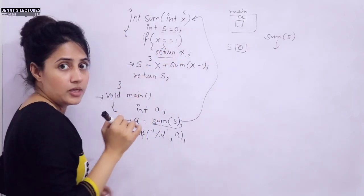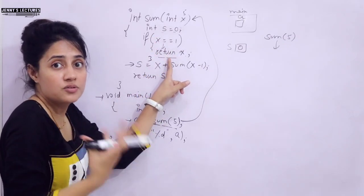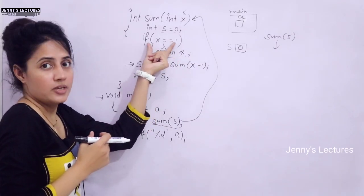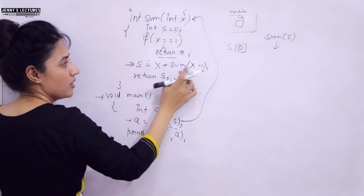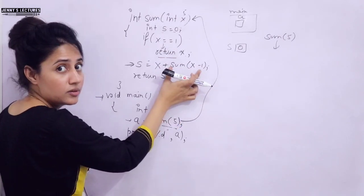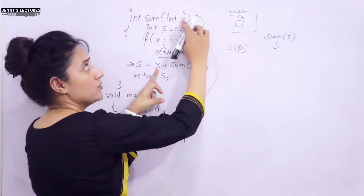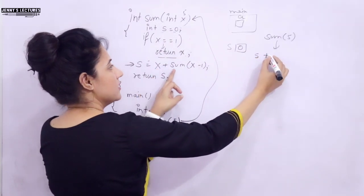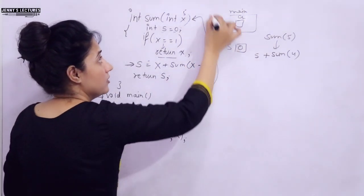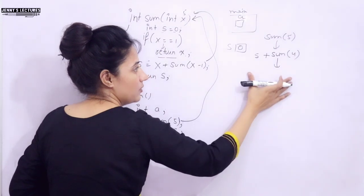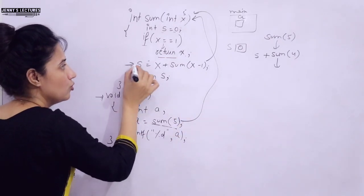Since the condition is false, we move to the next statement: s = x + sum(x - 1). We are calling the function again. Here x is 5, so we execute 5 + sum(4). We call the function again with 4. x is not 1, condition is false again, so we execute x + sum(x-1), which is 4 + sum(3).